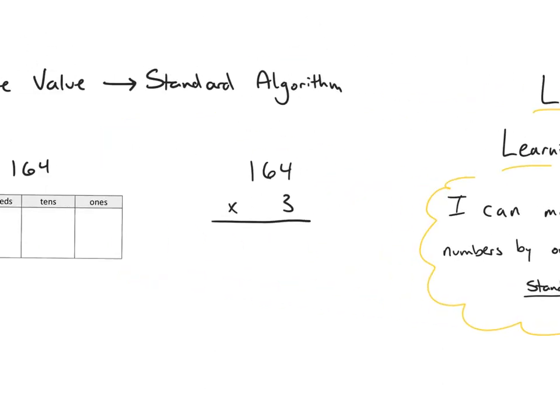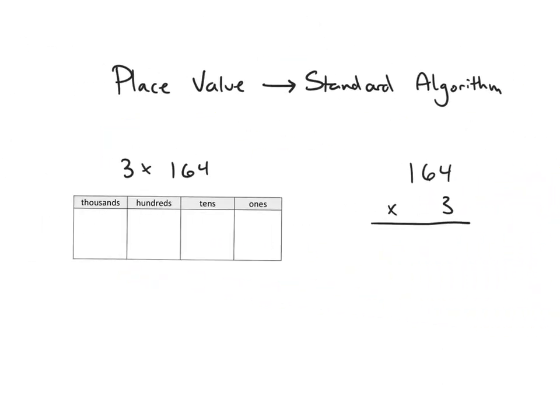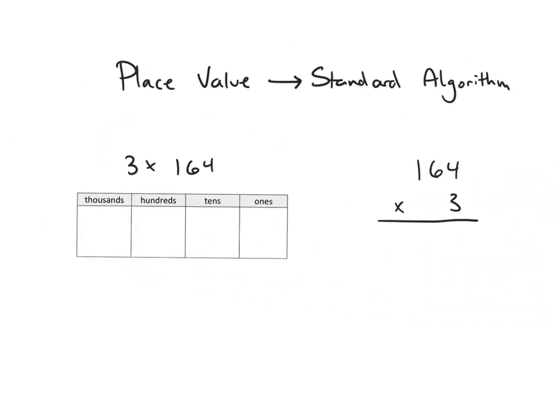Let's go ahead and jump into the first problem. I'm going to be multiplying 3 times 164, and I'm going to be comparing the place value disks method to the standard algorithm. I'm going to be going one step at a time and showing how each step works in the different strategies.